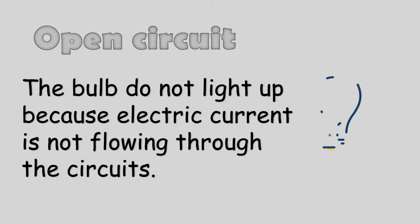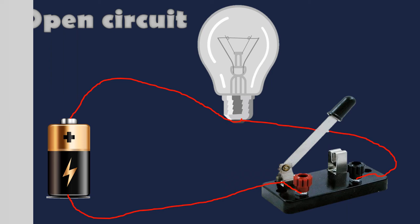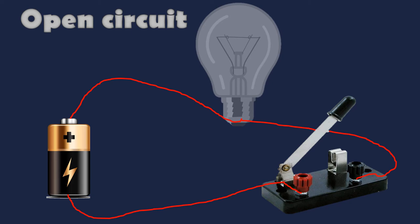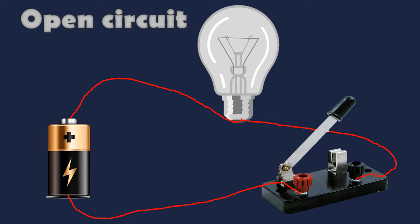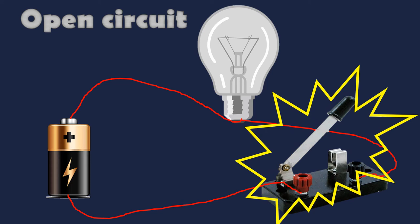Let's have the open circuit. The bulb does not light up because electric current is not flowing through the circuit. In this open circuit, we have a bulb, battery, switch, and wires. But as you can observe, this slide is dimmer than the closed circuit because the switch of this circuit is open. That's why the bulb doesn't light up.